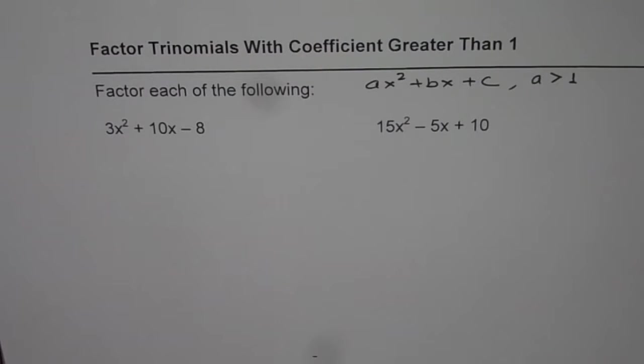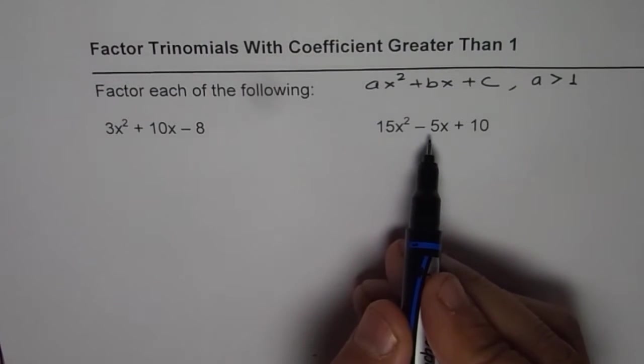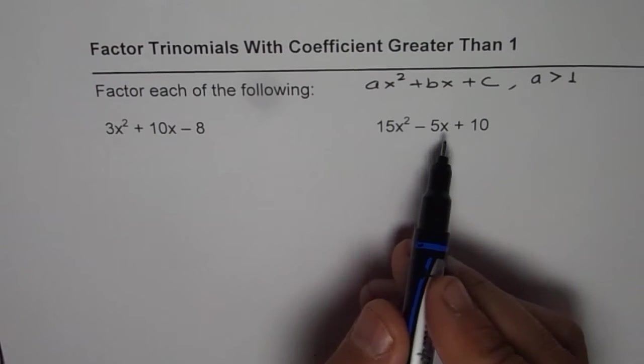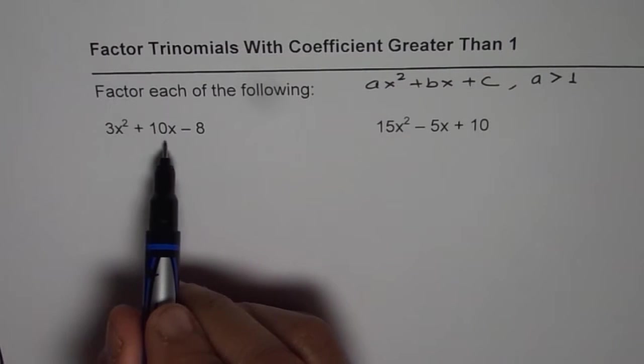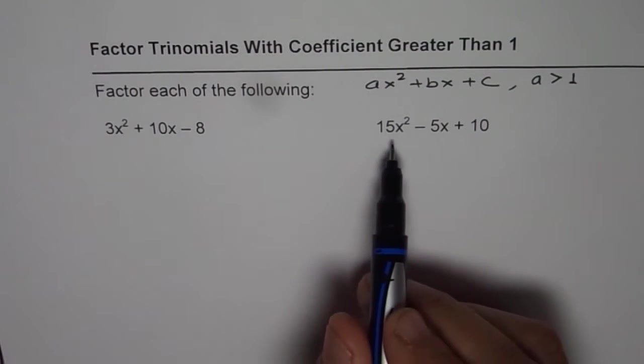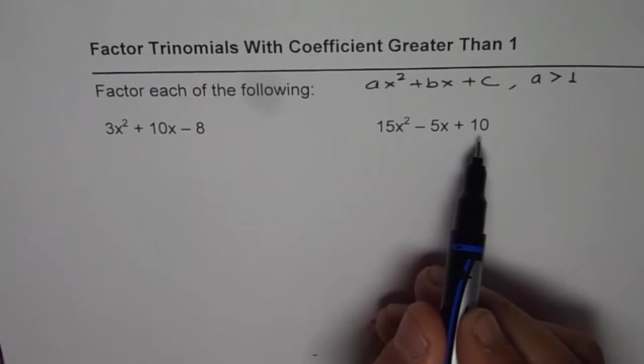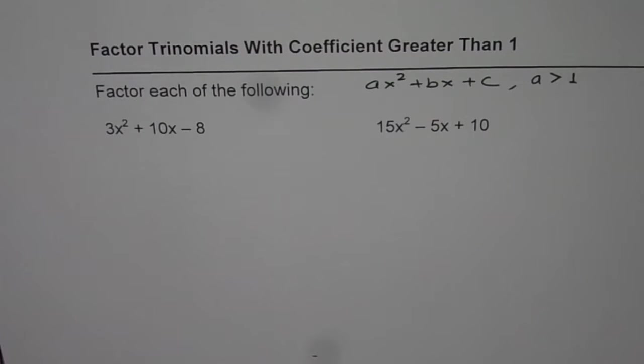Well the strategy is kind of the same. The strategy is when you are given a trinomial. We have two of them here. So let us see how to solve them. The first one is 3x² + 10x - 8. The other one is 15x² - 5x + 10. You can always pause the video, answer, and then check your solution.